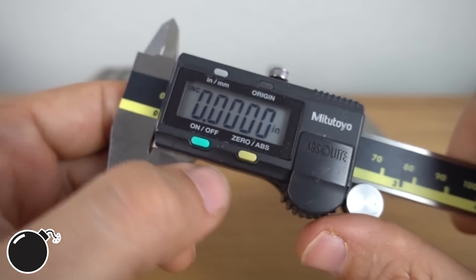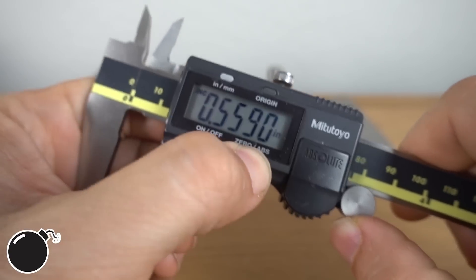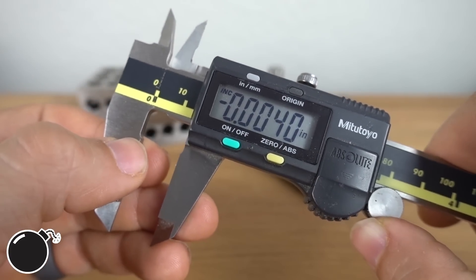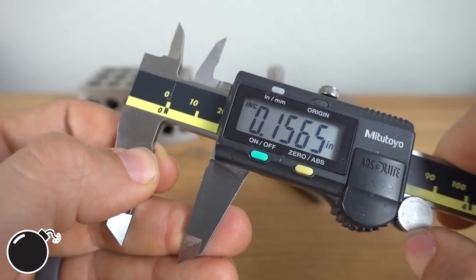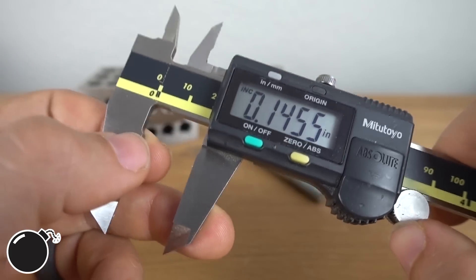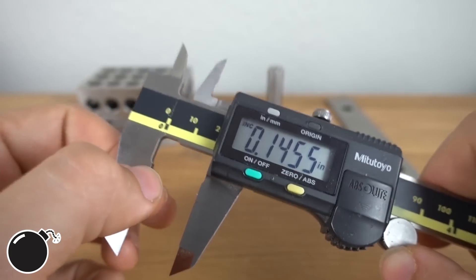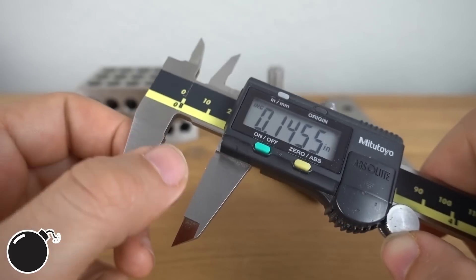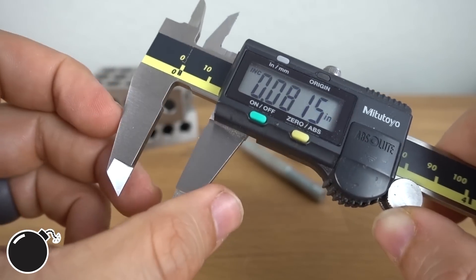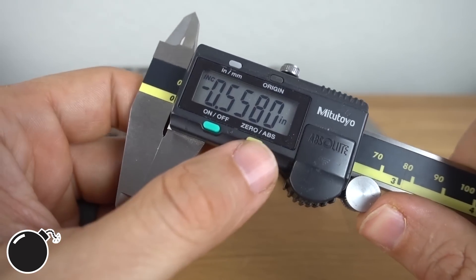The zero button makes wherever the calipers are at the moment zero. Then smaller measurements are negative and bigger are positive, which is super useful when you're trying to compare two parts or make a relative measurement. There are a few specific times where that comes in really handy, and I'll talk about those later, but just always keep this button in mind when you can't figure out how to measure something.